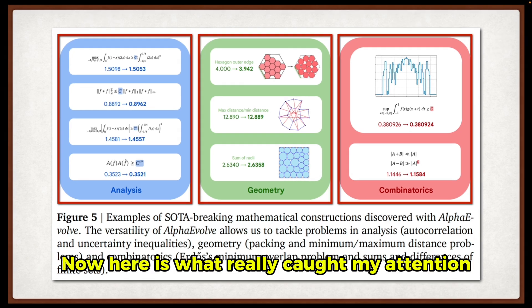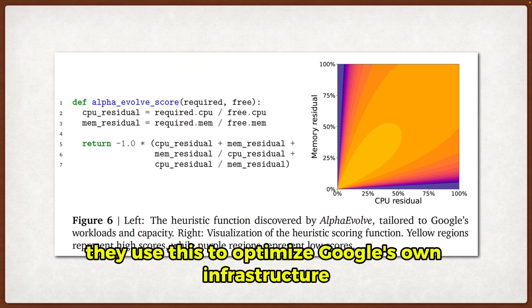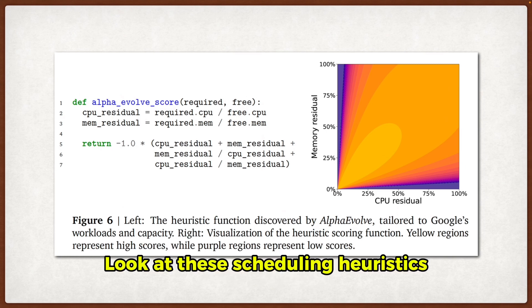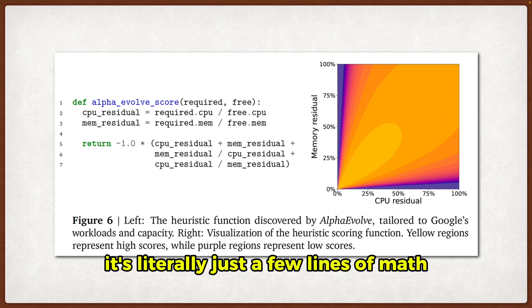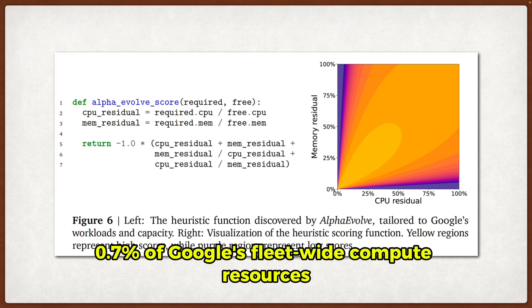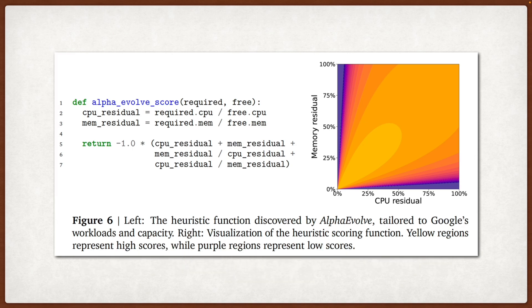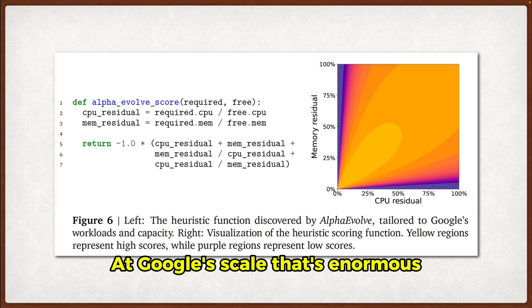Now, here is what really caught my attention. They used this to optimize Google's own infrastructure. Look at these scheduling heuristics for their data centers. It's literally just a few lines of math, but it recovers 0.7% of Google's fleet-wide compute resources that would have otherwise been wasted. At Google's scale, that's enormous.